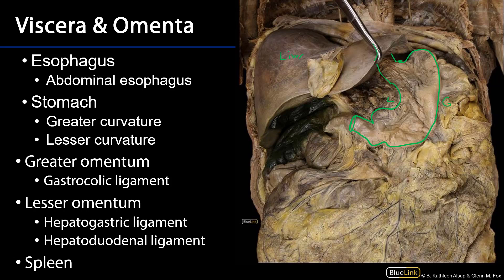The greater and lesser omenta are associated with these curvatures. The gastrocolic ligament comes down here and spreads out over the intestines. It's richly imbued with adipose connective tissue and wraps back up around to the transverse colon. This is called the gastrocolic ligament, and many people also call it the omental apron.